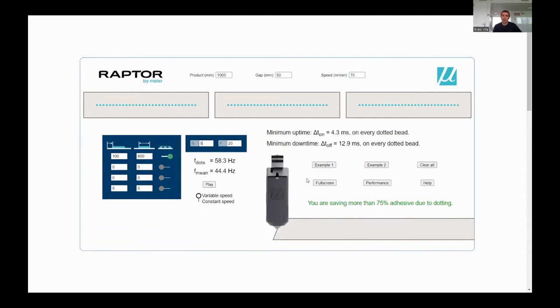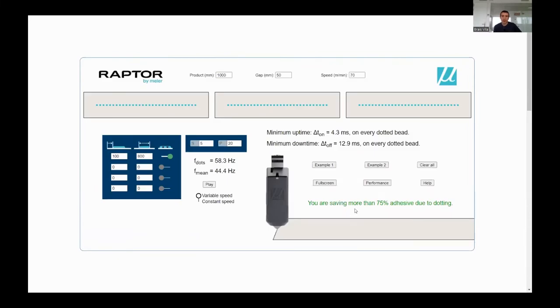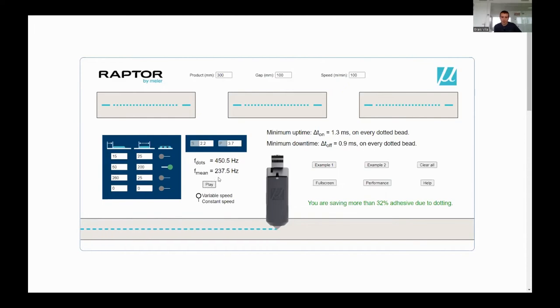Once these calculations are made and I have these four different parameters here - 58, 44, 4.3, 12.9 - I can click here on performance and I can see whether the specific application is feasible with this applicator or not. I will look here on example one, which is an example that I had prepared beforehand. This is what the application looks like.